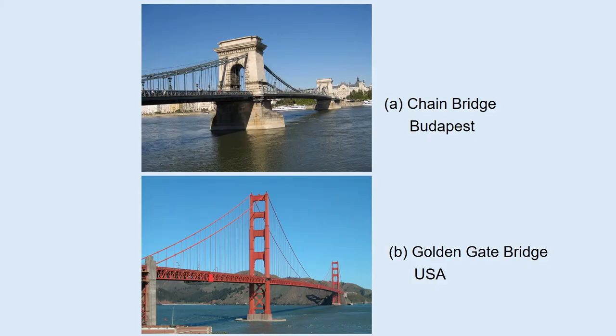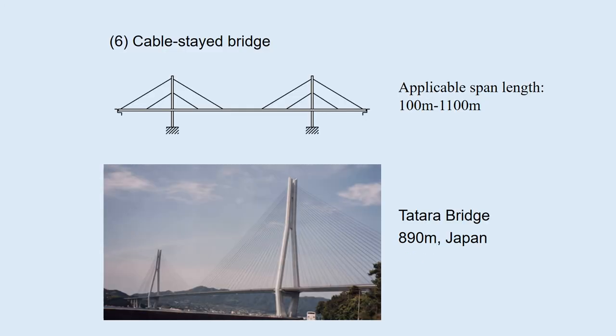Examples of suspension bridges include the Chain Bridge in Budapest, Hungary, and the Golden Gate Bridge in San Francisco — a beautiful bridge and my personal favorite. The cable-stayed bridge is also suitable for long-span bridges, with applicable span lengths up to 1,100 meters. This is the Tatara Bridge in Japan, with a main span of 890 meters.